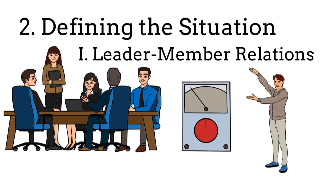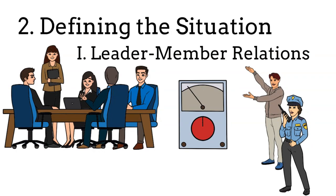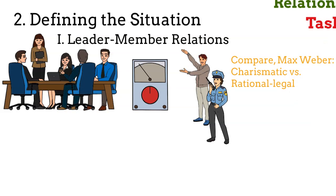This makes a lot of sense — a good leader gets people to follow through inspiration, and a poor leader depends more on formal authority to get people to listen. This is similar to Max Weber's classification of authority, where charismatic leadership builds on the leader's persona, and rational legal authority builds on bureaucracy and formal power. The Leader-Member Dimension has two possible assessment outcomes: good and poor.